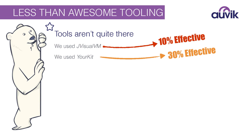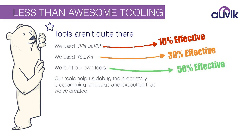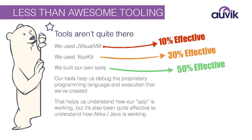We ended up building our own tools, mostly to help debug the proprietary programming language we wrote along with the execution engine that runs it. That largely helps us understand how our app is working, not really what ACA, Java, or Scala is doing underneath. But understanding our app helps us understand how it uses the underlying framework. The bottom line is we still want better tools.